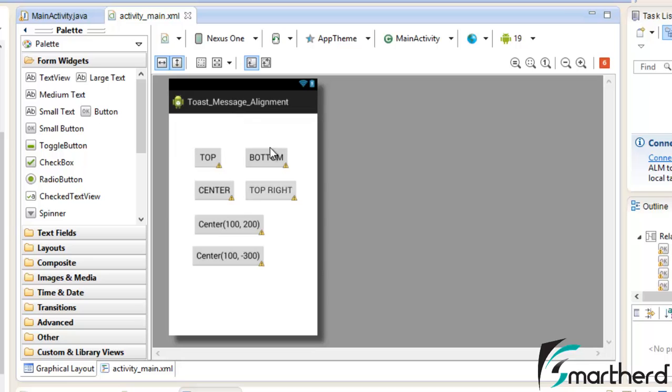The layout of the activity_main.xml is like this. I am having six buttons and all will show the Toast message in the respective areas.